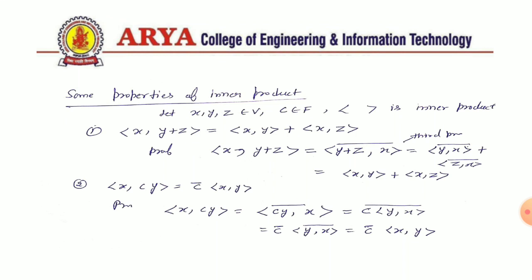We can prove the second property as follows: inner product of (X, CY). By definition, we write it as the complex conjugate of inner product of (CY, X). Again by definition, we can remove C from the function to get C times the complex conjugate of inner product of (Y, X), which gives C-bar times inner product of (X, Y).